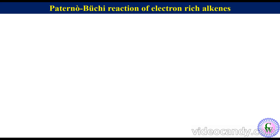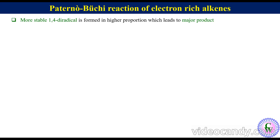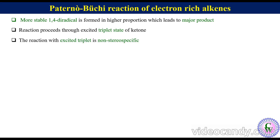Paternò-Bùchi reaction of electron-rich alkenes: alkyl or aryl ketones or aryl aldehydes react with electron-rich alkenes through the excited triplet state of the carbonyl and ground state of the alkene. The reaction with the triplet state is non-stereospecific. We should keep in mind that the more stable 1,4-diradical is formed in higher proportion, leading to the major product.